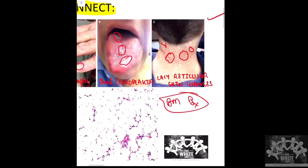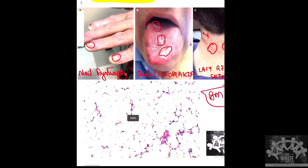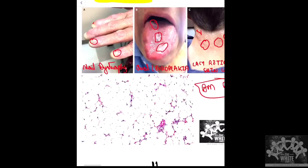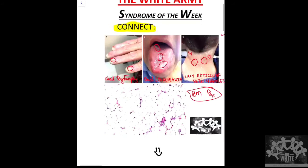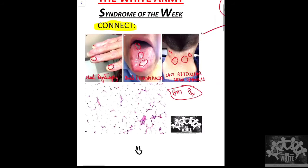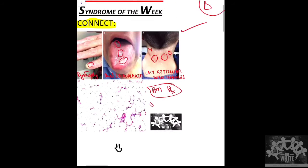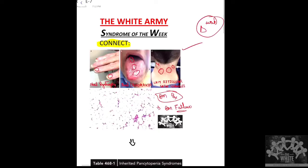This triad presents along with a particular bone marrow finding — the bone marrow biopsy shows a hypocellular marrow with fatty infiltration, indicating bone marrow failure. Among bone marrow failure syndromes, we can think of Fanconi anemia, Shwachman-Diamond, and other inherited forms.